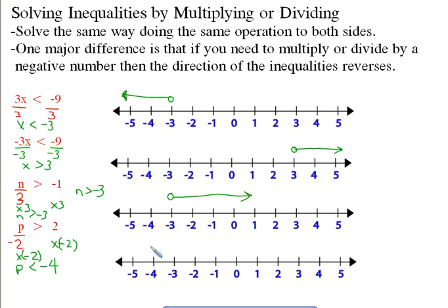So negative 4 is here, and p is less than negative 4, so it should be heading this direction. Let's see if that makes sense. Plug in 0 here. 0 divided by negative 2 is 0. 0 is not greater than 2. Then we plug in something from over here. Let's try negative 6 since that would be over here. Negative 6 divided by negative 2 is going to be 3. That is greater than negative 2.